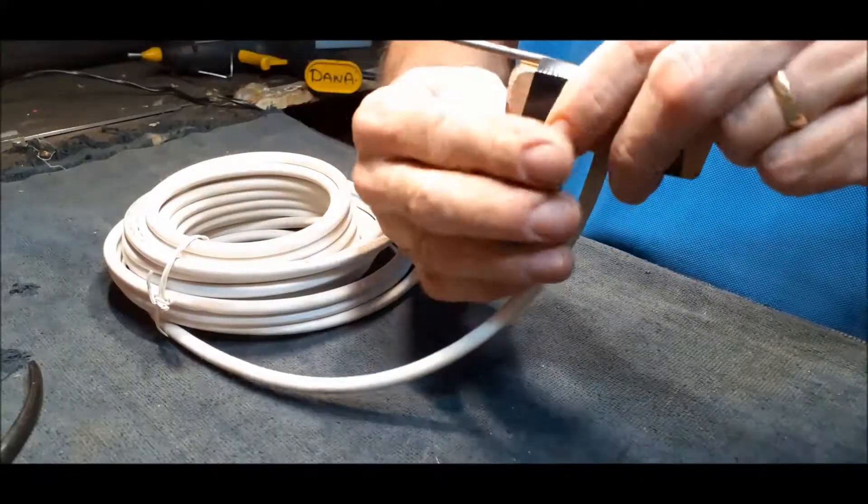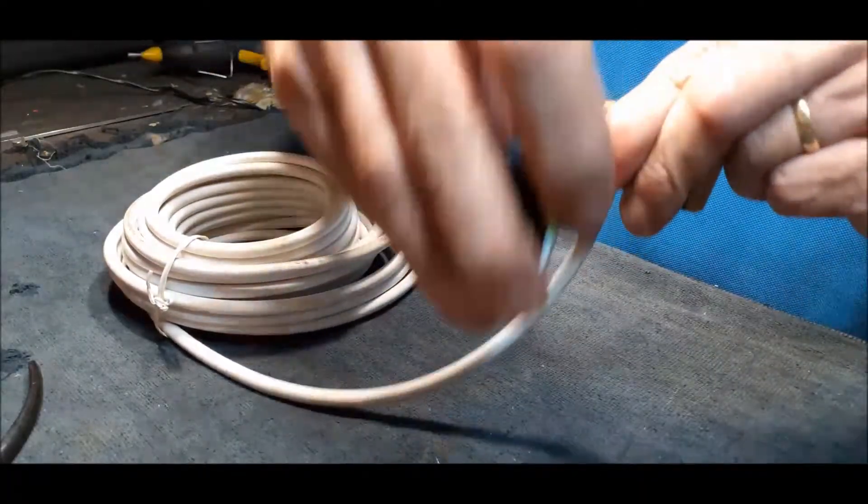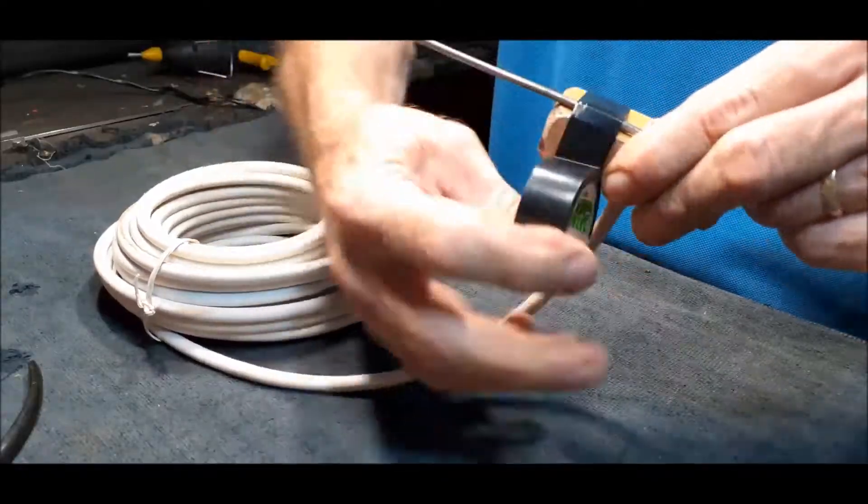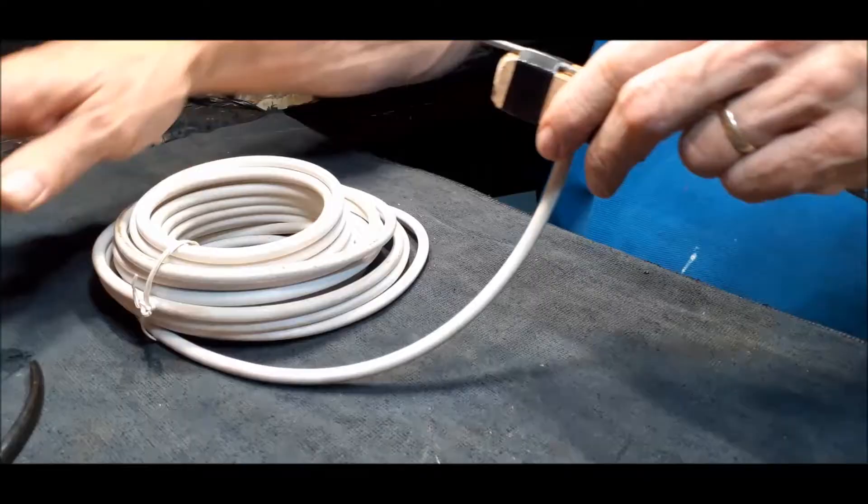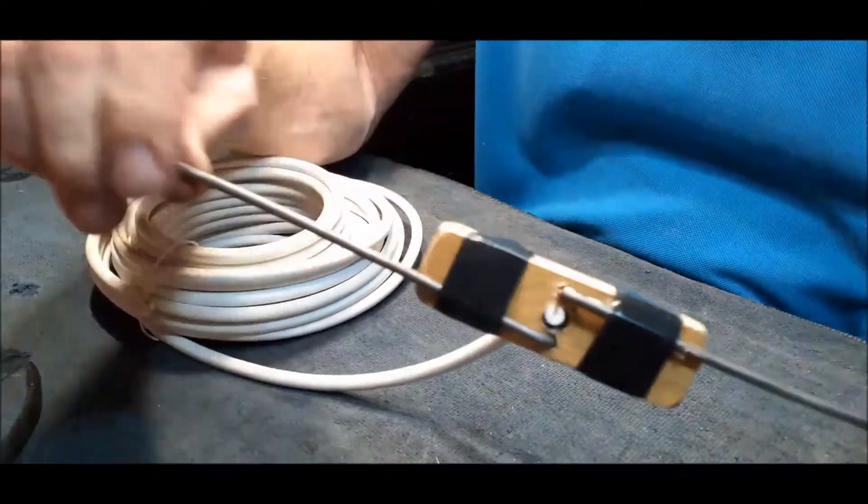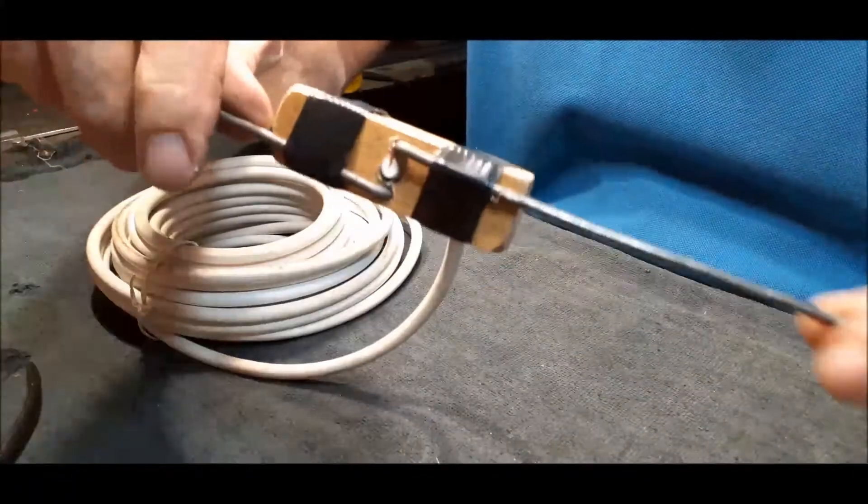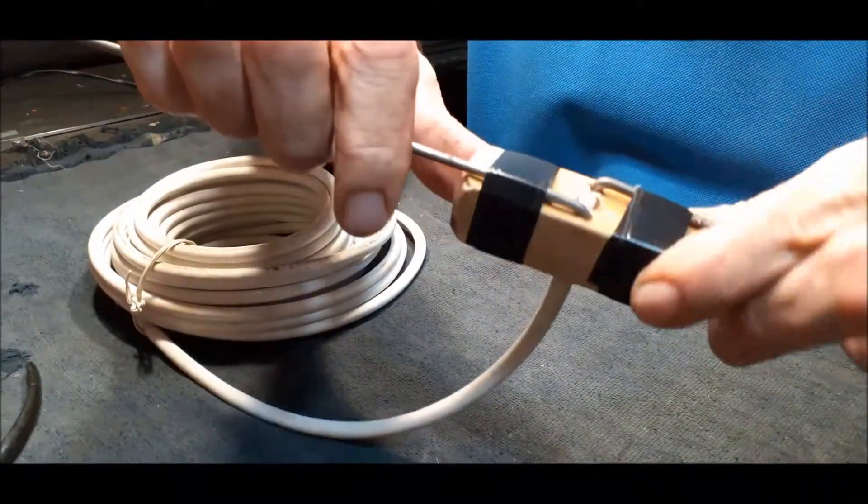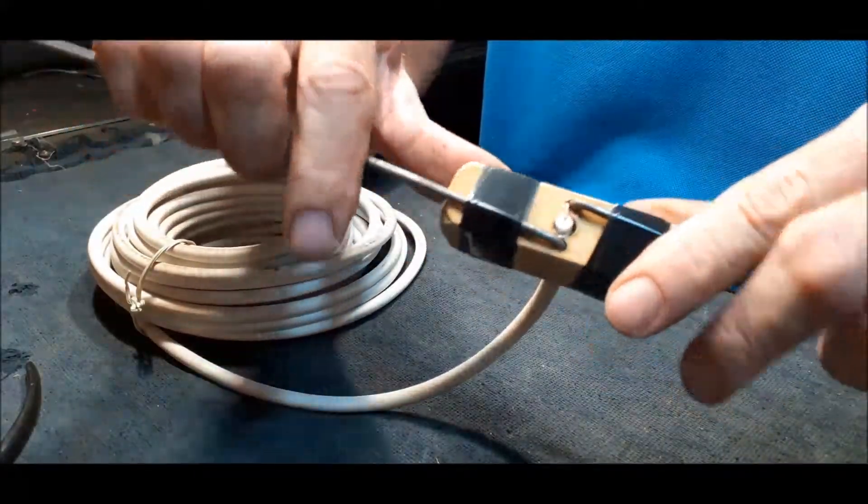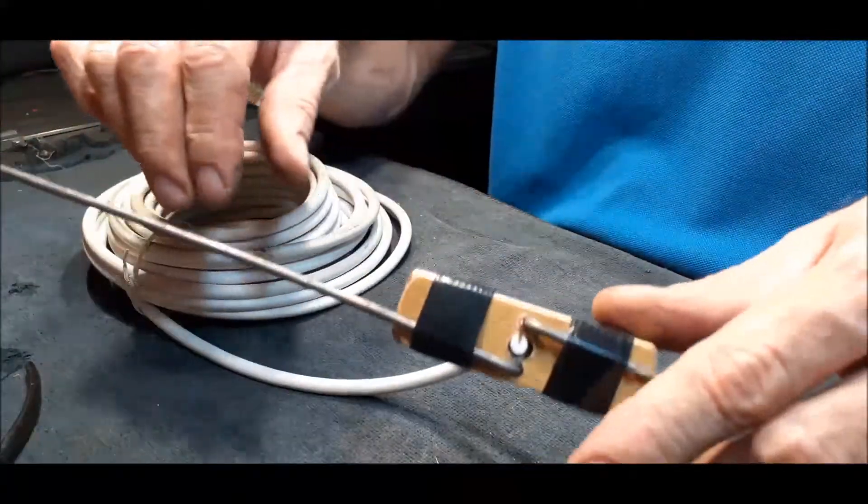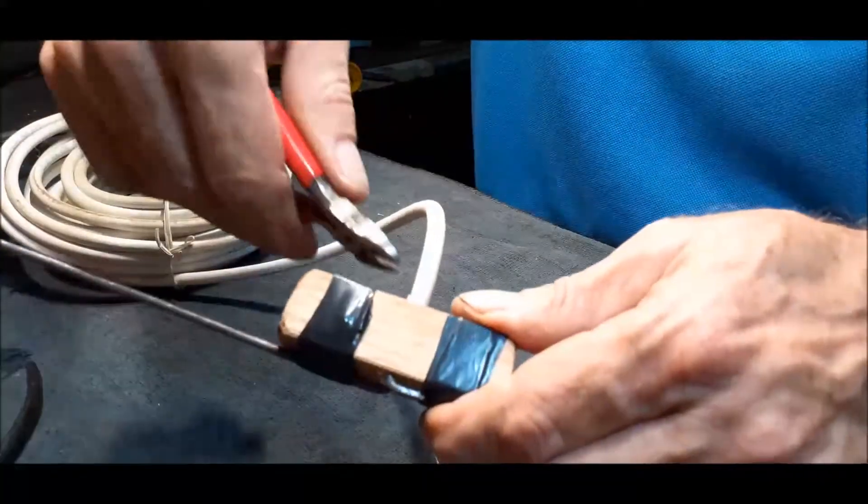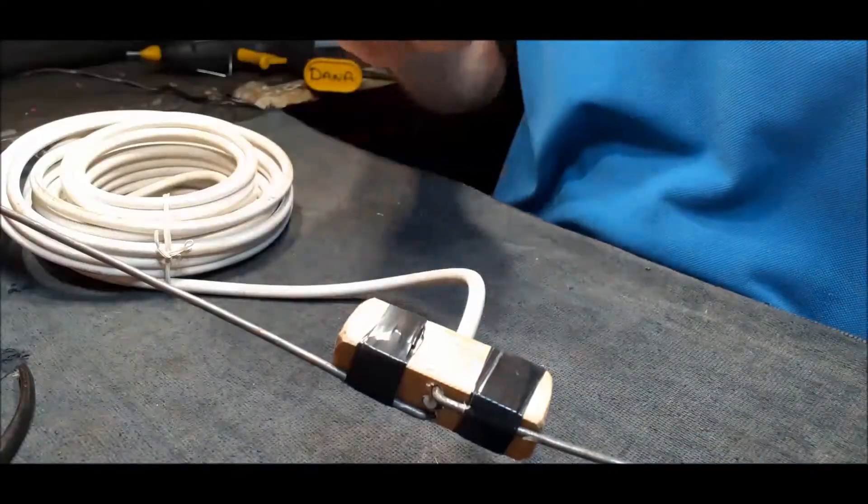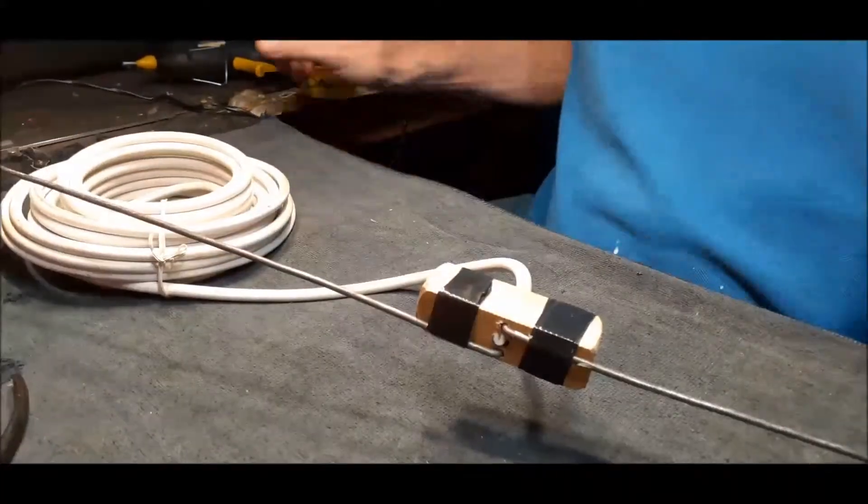That's it, see now you have a little block of wood with your coax cable through and with the two antennas. Let's just get the pliers here, just to cut off the excess here.